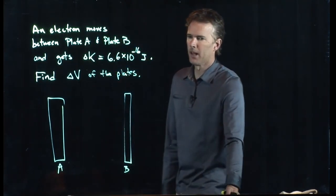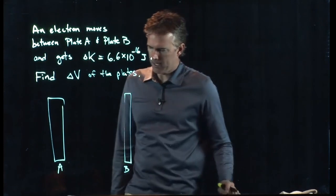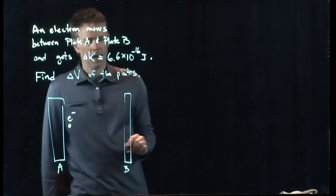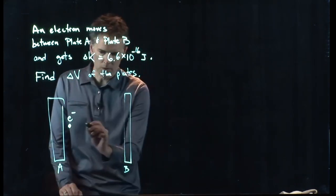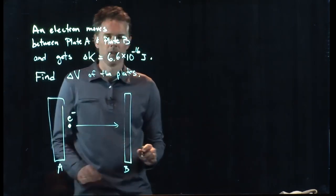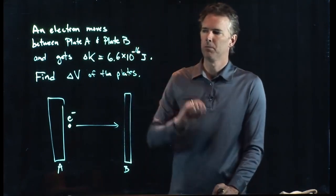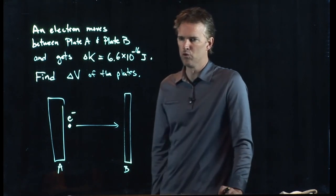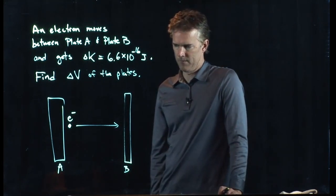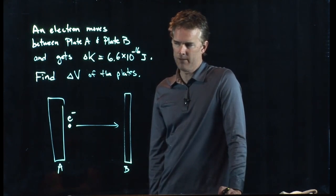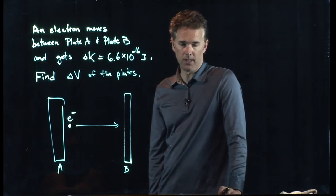I'm going to put an electron at plate A, and it's going to accelerate towards plate B, and it's going to pick up energy, and it's picking up 6.6 times 10 to the minus 16 joules of energy. So, we need to find delta V of the plates.